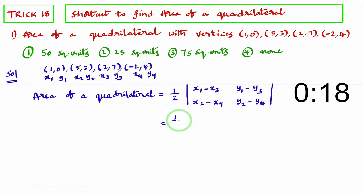Now substitute all these things in this formula. Half into determinant of x1 minus x3, 1 minus 2, 2 is minus 1, y1 minus y3, 0 minus 7 is minus 7, x2 minus x4, 5 minus of minus 2, that is 7, y2 minus y4, 3 minus 4, that is minus 1,